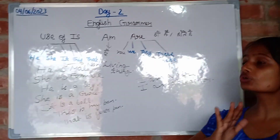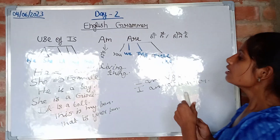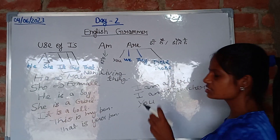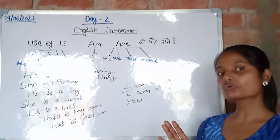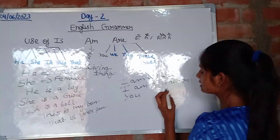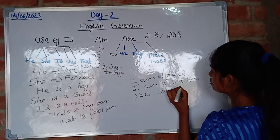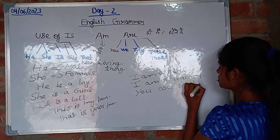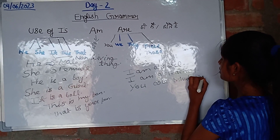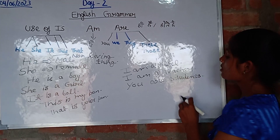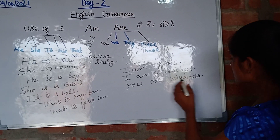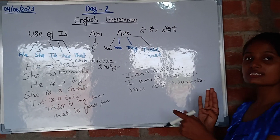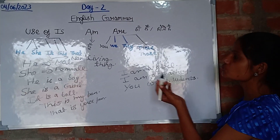Next we have 'are', and 'are' is used for plural. One rule is that 'you' is used for both singular and plural persons. So we can say 'you are a student' for singular, and 'you are students' for plural — because 'student' is singular and 'students' is plural.